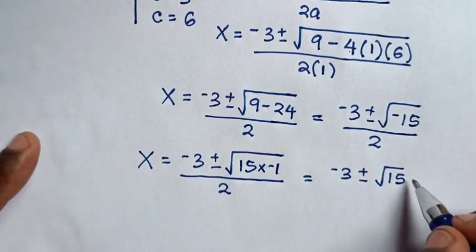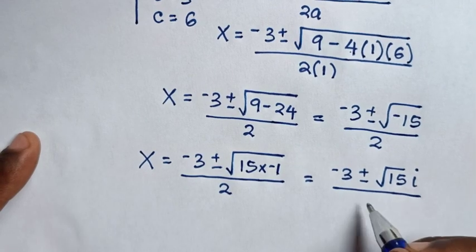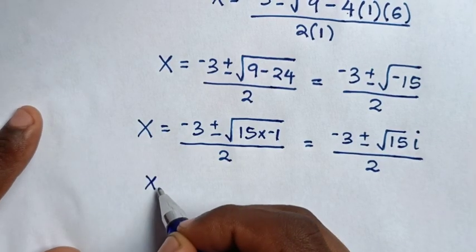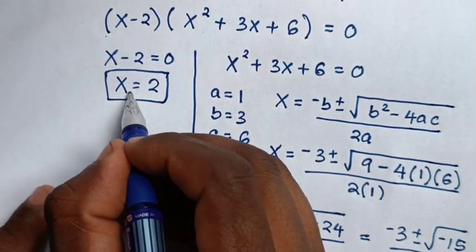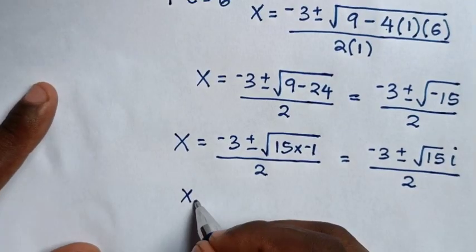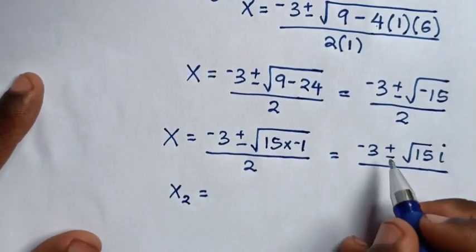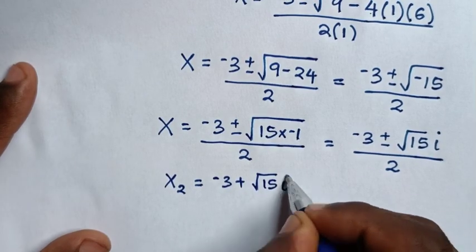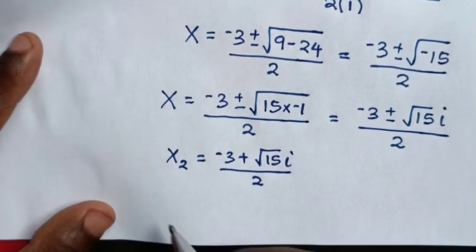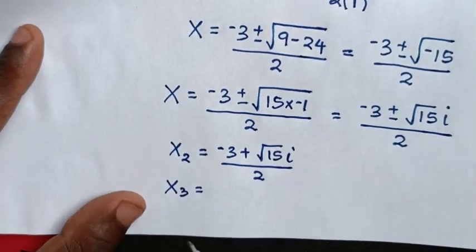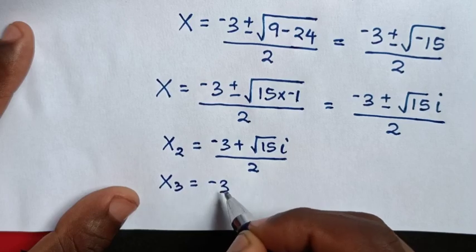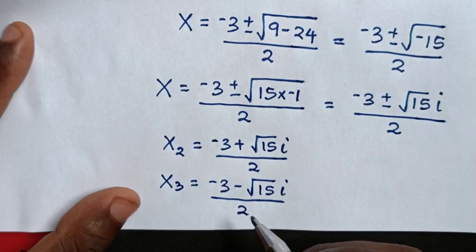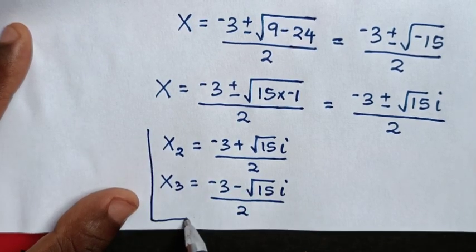So we have three solutions. The first value of x is the real number x = 2. The second value is x = (-3 + √15 i) / 2, and the third value is x = (-3 - √15 i) / 2. These second and third values are complex solutions.